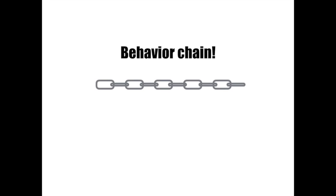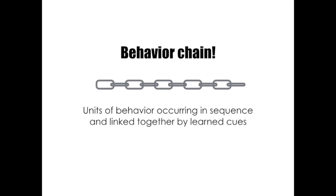We need a behavior chain. But what's a behavior chain? A behavior chain is a really cool phenomenon where behaviors are performed in sequence linked together by learned cues. So as each behavior finishes, the cue for the next behavior is given and the chain flows continuously. And the best part is that when set up correctly, the behavior chain is more or less self-maintaining.